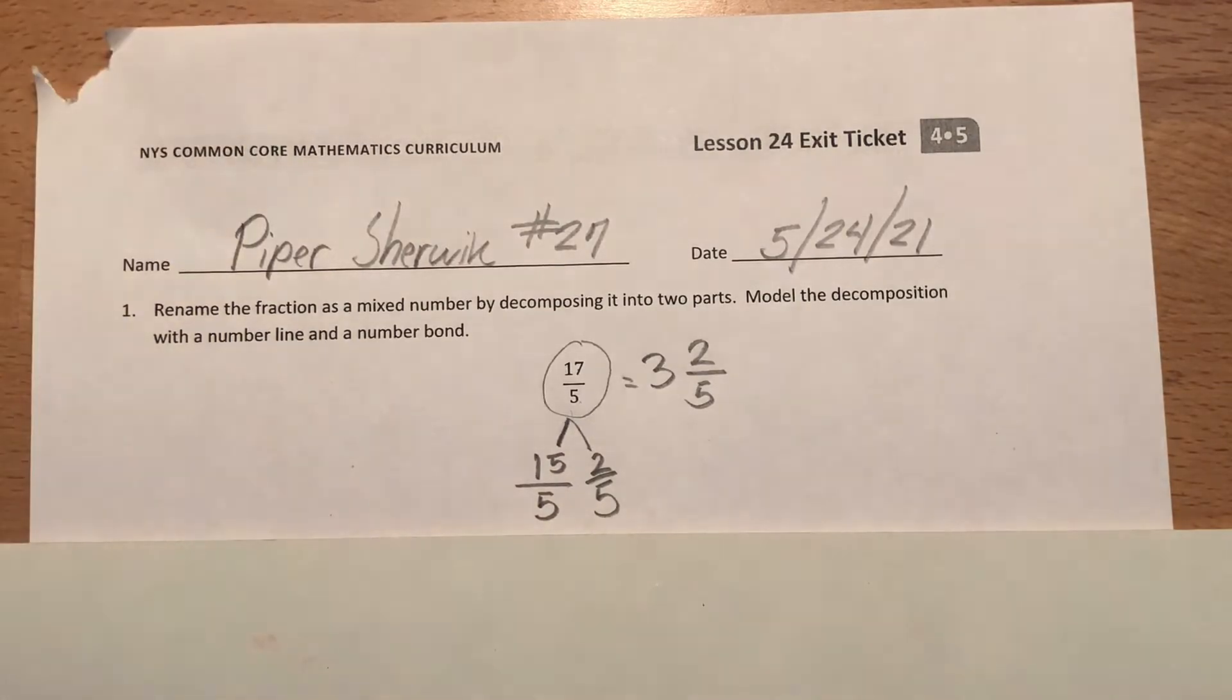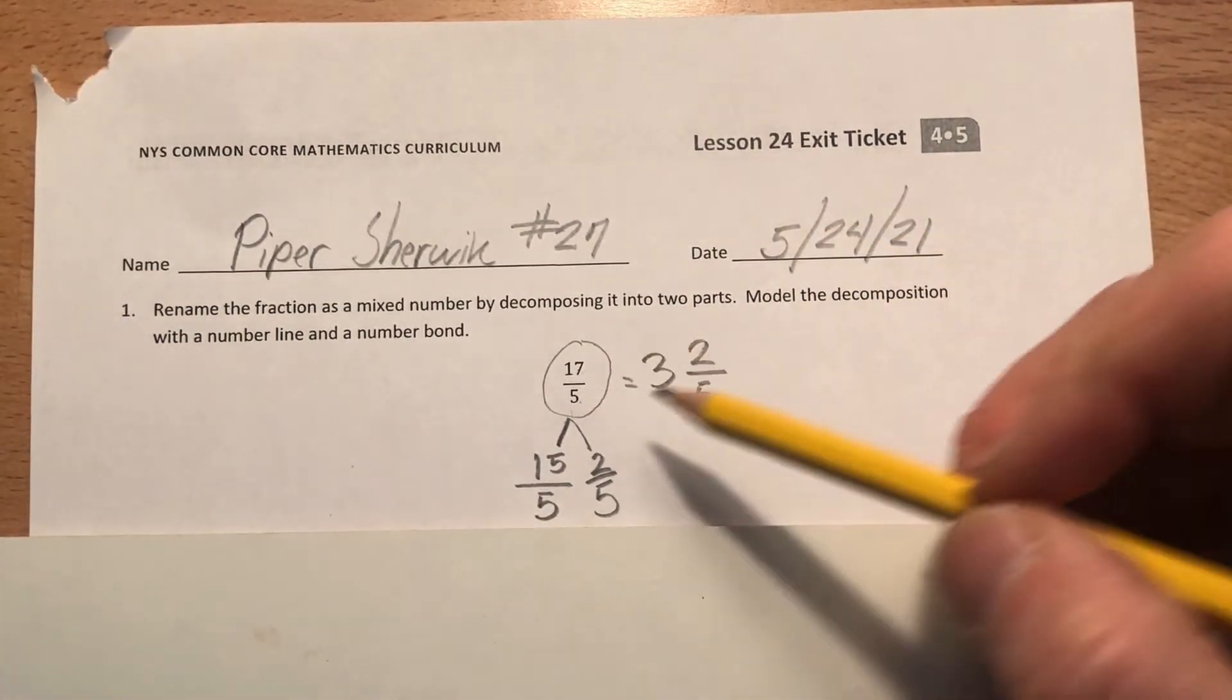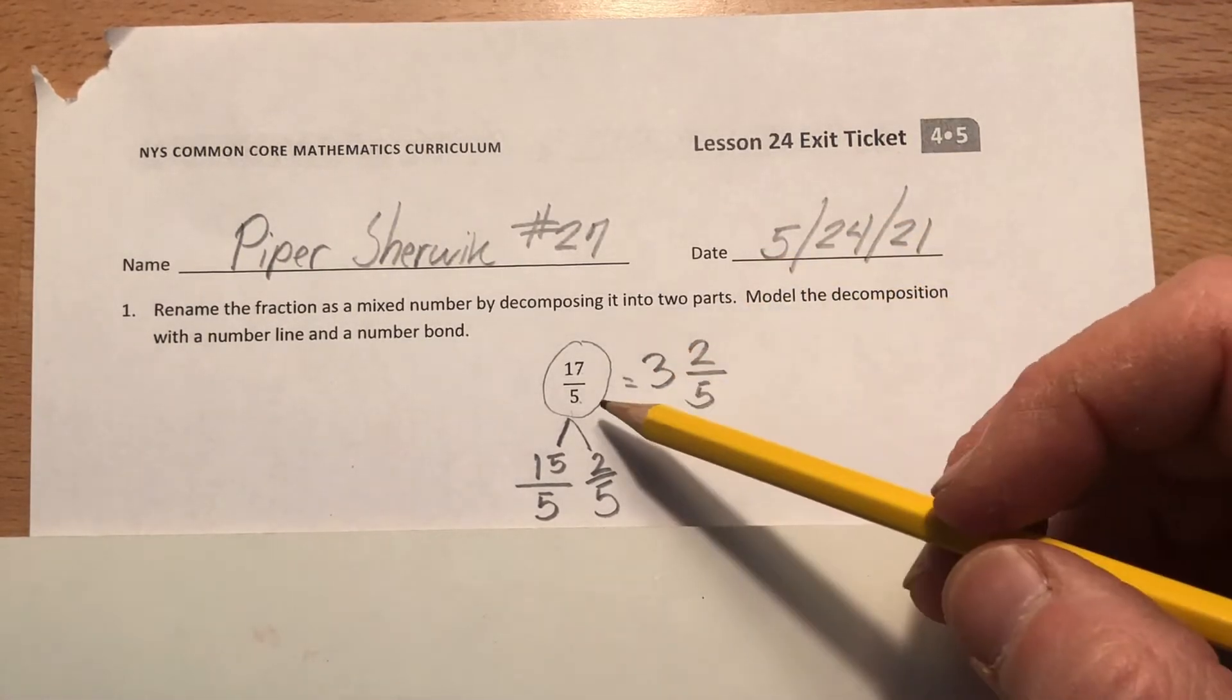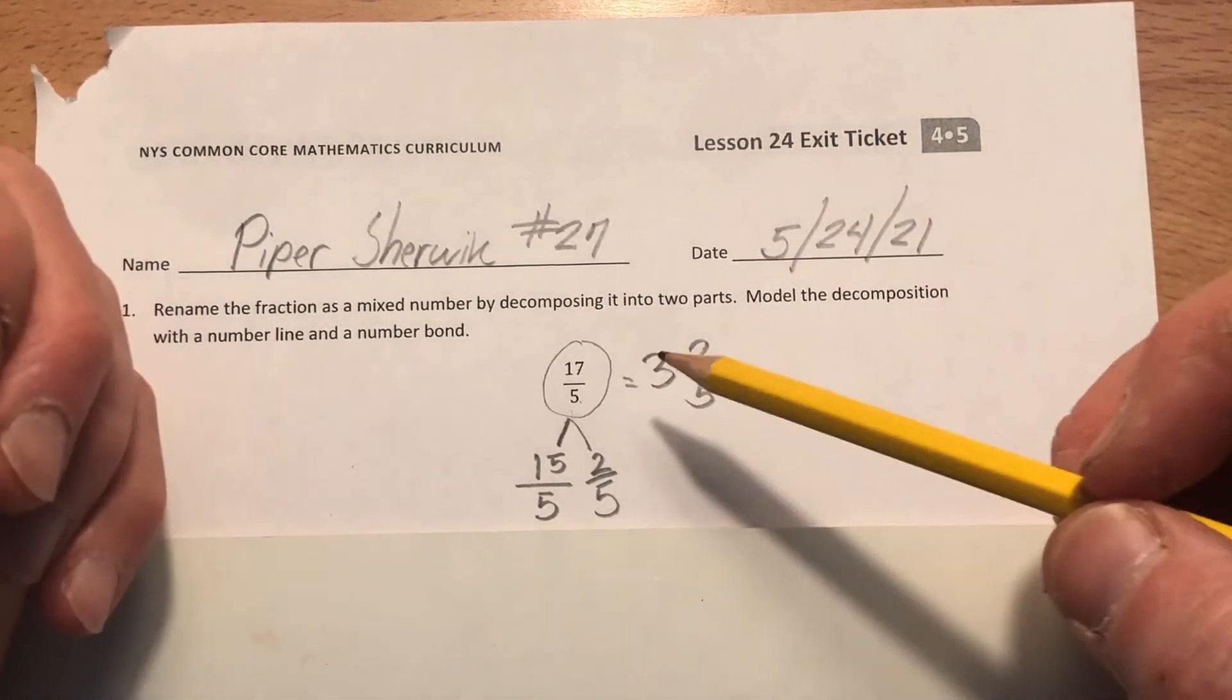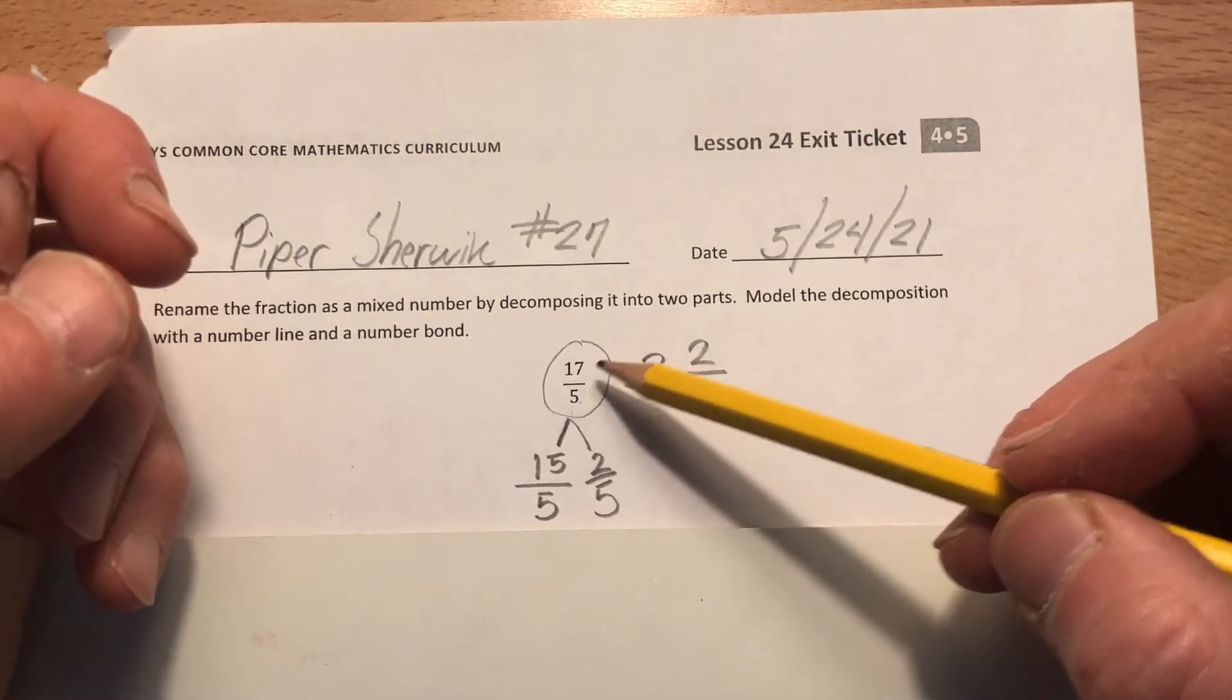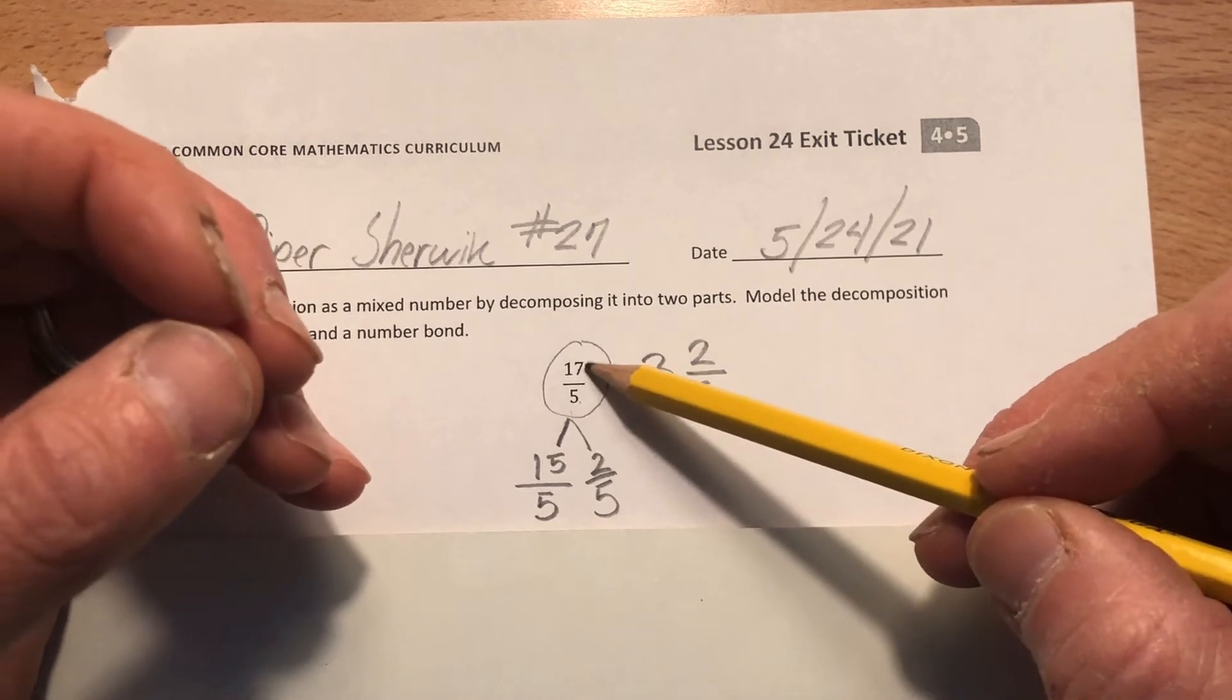So I asked myself how many fives fit into 17. And the answer to that was three, without going over, of course, right? If I count by five, three times, five, 10, 15, I know that that'll fit in. So if I count it by four times, it'll get to 20, and that's higher than 17.